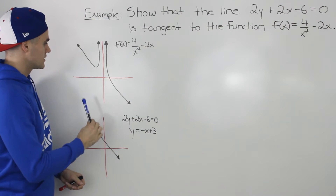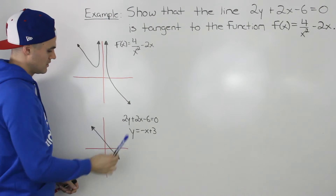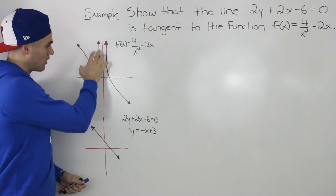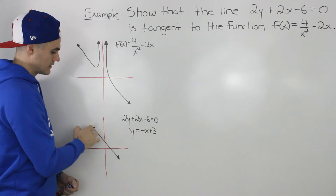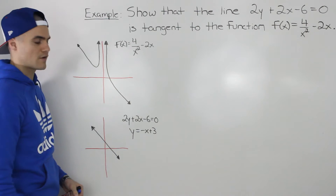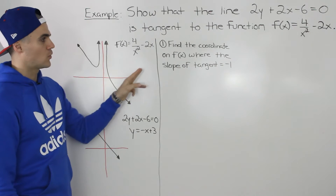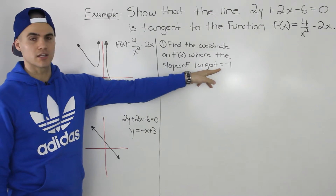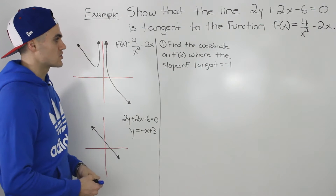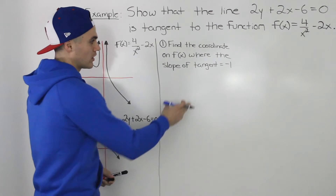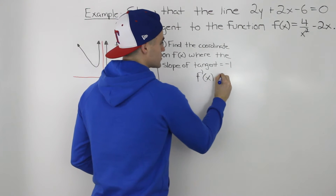We don't know where it's going to be — maybe around here or maybe around here. We have to show that somewhere on this function, at some x value, or maybe even multiple x values, this line is going to be tangent. The first step is to find the coordinate on this function where the slope of the tangent is going to equal negative 1, because this line has a slope of negative 1. In other words, we have to find where the derivative is equal to negative 1.